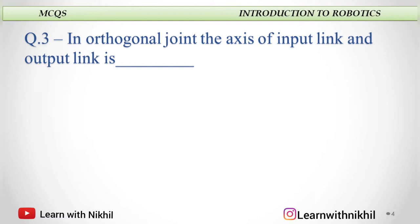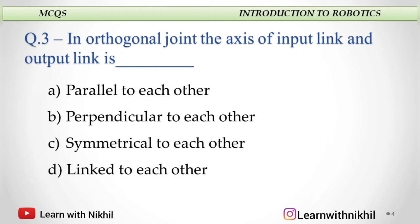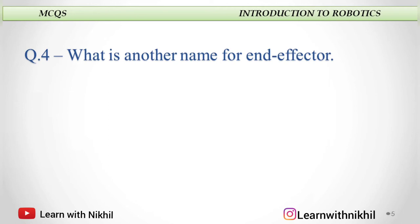Next: In an orthogonal joint, the axis of the input link and output link is — parallel to each other, perpendicular to each other, symmetrical to each other, or linked to each other? In an orthogonal joint, the input axis and the output axis are perpendicular to each other.